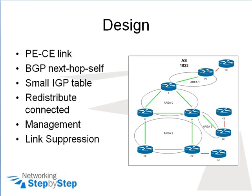The first area of concentration is the link between the PE and CE routers — not in an MPLS environment, but from the perspective of the provider providing connectivity to the customer and learning routes from the customer. That link shown in red between the PE and CE routers needs to be carried in your OSPF, because you need a route to the next hop. When IBGP advertises a route inside your network, it should not change the next hop, which means any router needing reachability to that customer will need a route to the next hop.